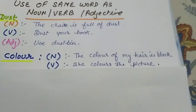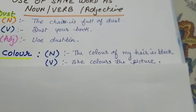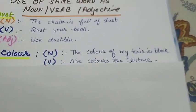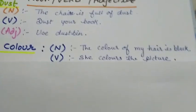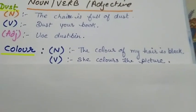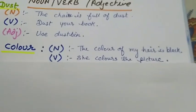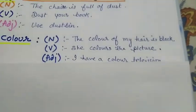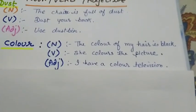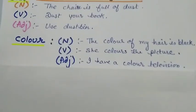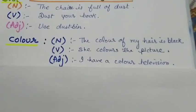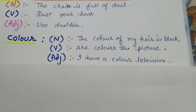Color is not just rang (color as noun), but rang karna (to color) is the verb. She colors - with present indefinite, we add 's' to the first form of verb. As adjective: I have a color television - a colored television describing the quality.